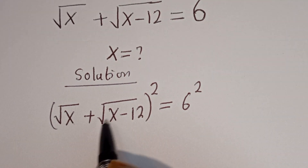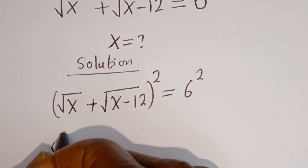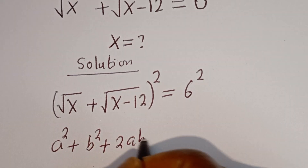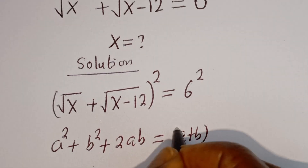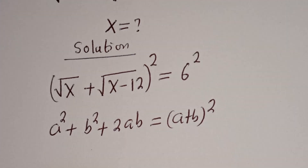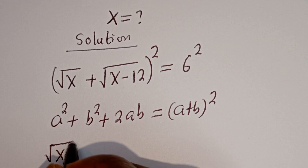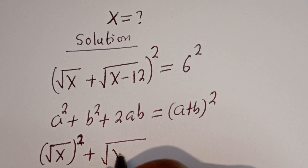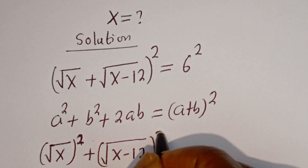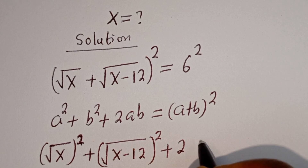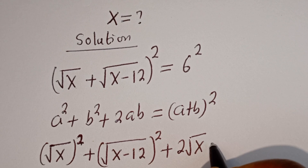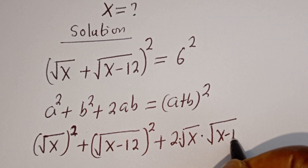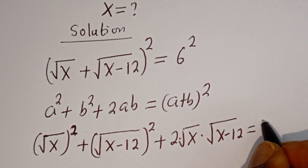Now, if you look at this, this is in the form of a squared plus b squared plus 2ab is equal to (a plus b) squared. Then this can be written as square root of x squared plus square root of x minus 12 squared plus 2 multiplied by square root of x multiplied by square root of x minus 12 is equal to 6 squared.